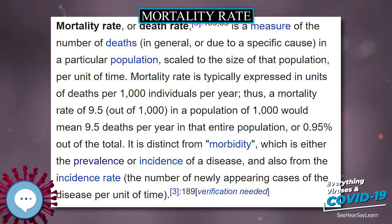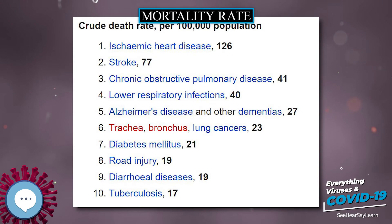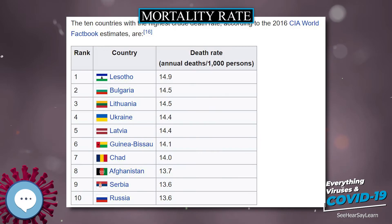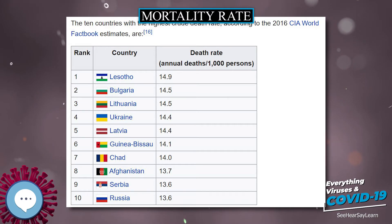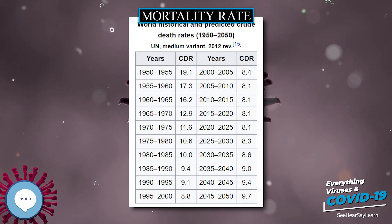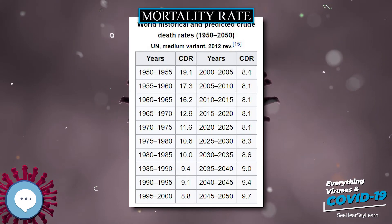As of 2020, for instance, the CIA estimates that the crude death rate globally will be 7.7 deaths per 1,000 persons in a population. In generic form, mortality rates can be calculated using the formula: D divided by P, multiplied by 10 to the power of n.